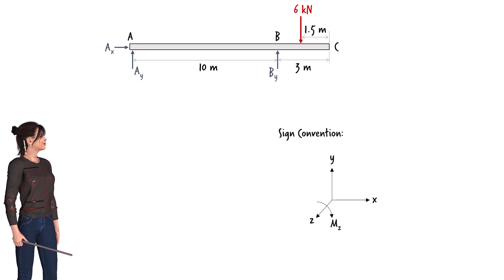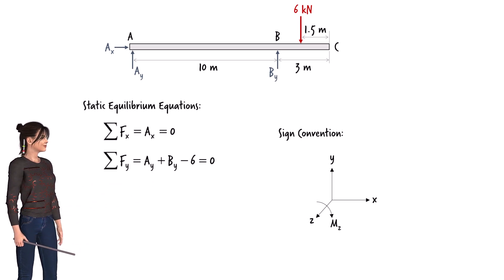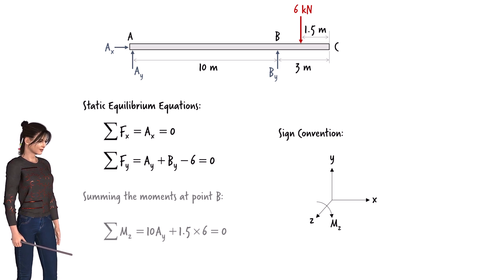We are now ready to write the equilibrium equations using this free body diagram. Summing the forces in the x and y directions, we get the first equations. Taking the sum of the moments of the forces at point B, we get the moment equilibrium equation.